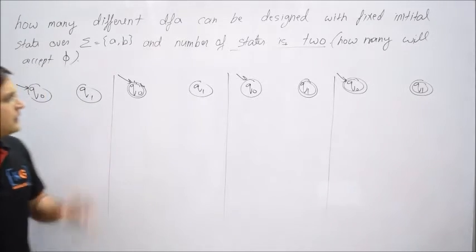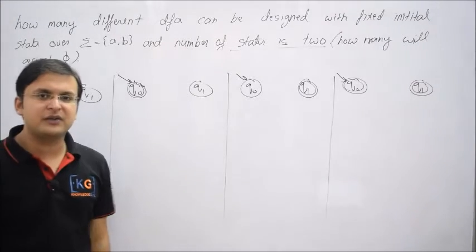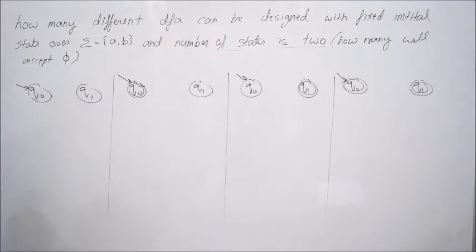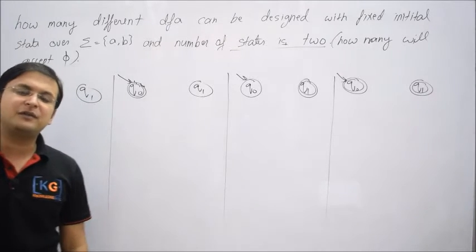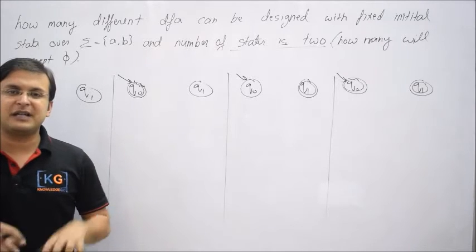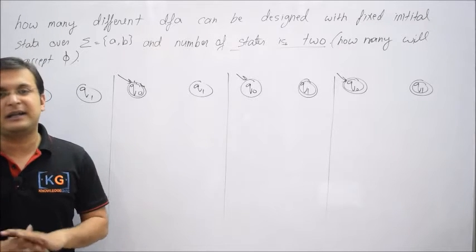So here the question is again the same: out of total those 64 cases how many DFAs will be there which will accept empty language, which means they accept nothing because empty set or empty language do not contain any string.